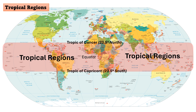It is bounded by the Tropic of Cancer in the Northern Hemisphere at approximately 23.5 degrees north latitude and the Tropic of Capricorn in the Southern Hemisphere at approximately 23.5 degrees south latitude.